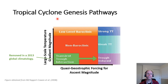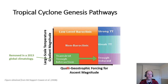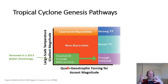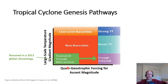We define these genesis pathways on a two-dimensional phase space where the x-axis references the quasi-geostrophic forcing for ascent magnitude. That's very jargony, and those of you who have not gotten into synoptic and dynamic meteorology may not know exactly what I mean. What I mean here is forcing from mid-latitude features or mid-latitude-like features — when you have a trough of low pressure that forces air to rise out ahead of it, or when you have a frontal boundary over which air ascends.